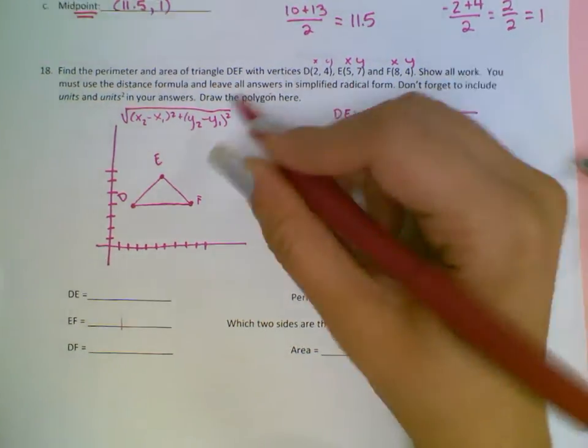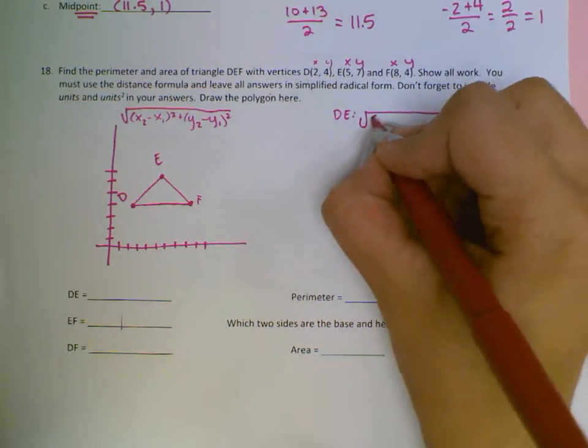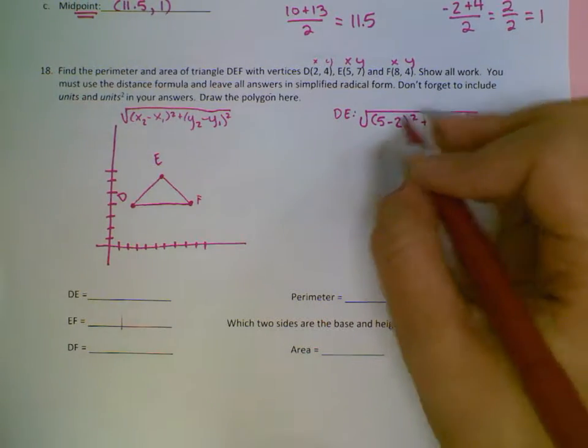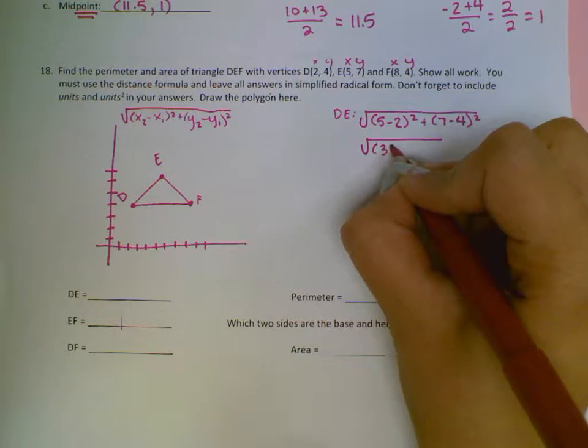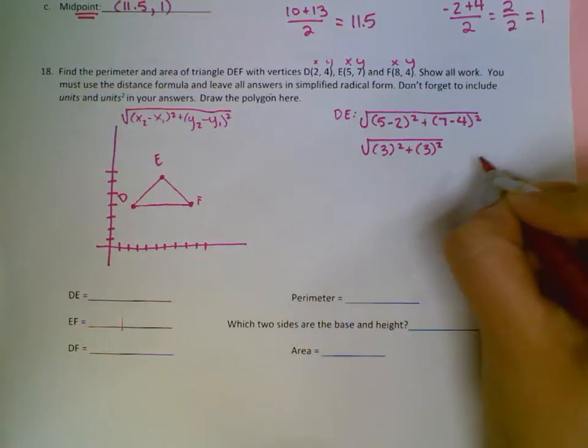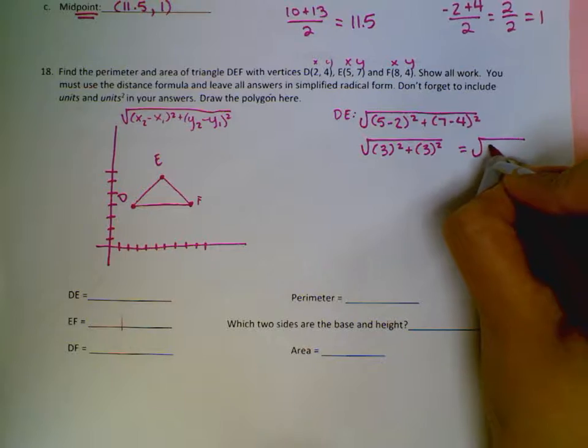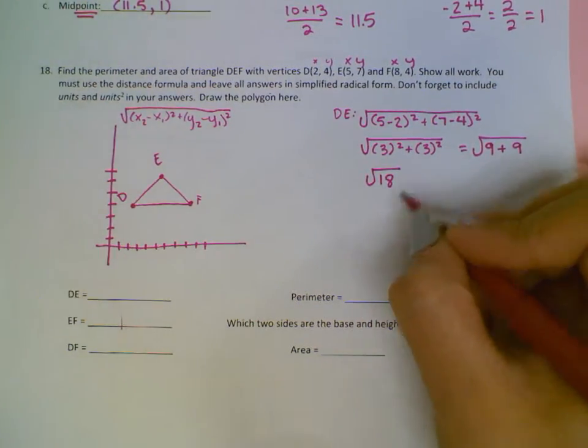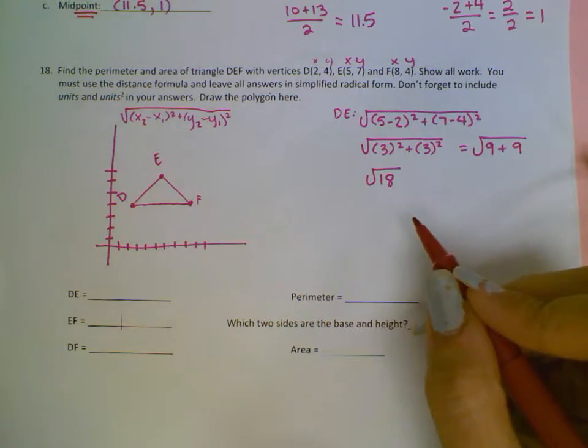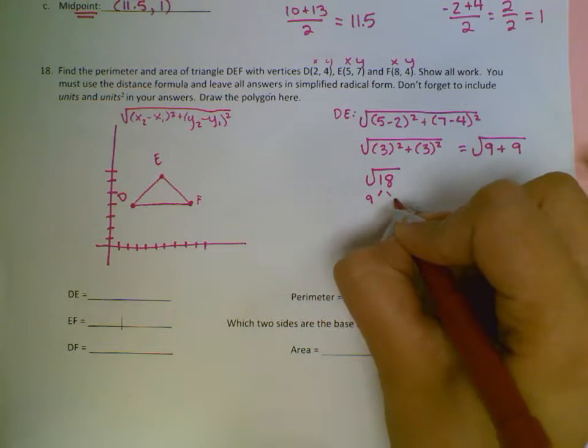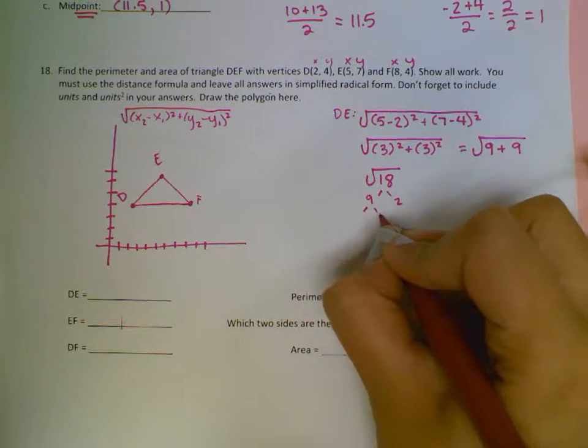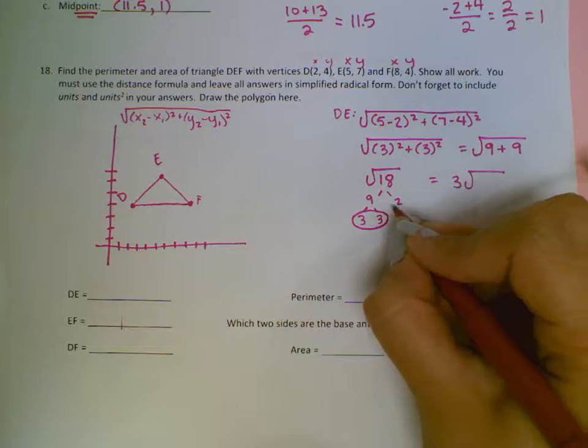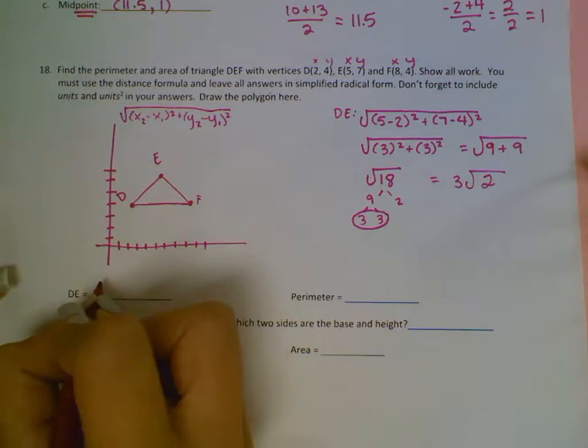DE will be, it doesn't matter which one you do for X1 and X2, so I'll do 5 minus 2 squared plus 7 minus 4 squared. 5 minus 2 is going to give me 3, so then I have 3 squared plus 7 minus 4 will also give me 3 squared. So now 3 squared is 3 times 3, which is 9, plus 3 squared, which is also 9. When I add these together, I get 18, so the square root of 18. This is the distance for DE. I need to simplify my radical though. 18 is 9 times 2. 2 can't go down any farther, but 9 is 3 times 3. So I'll circle that pair, it will come outside of the radical, one of them will, and the 2 will stay on the inside. So the distance for DE is 3 square root of 2.